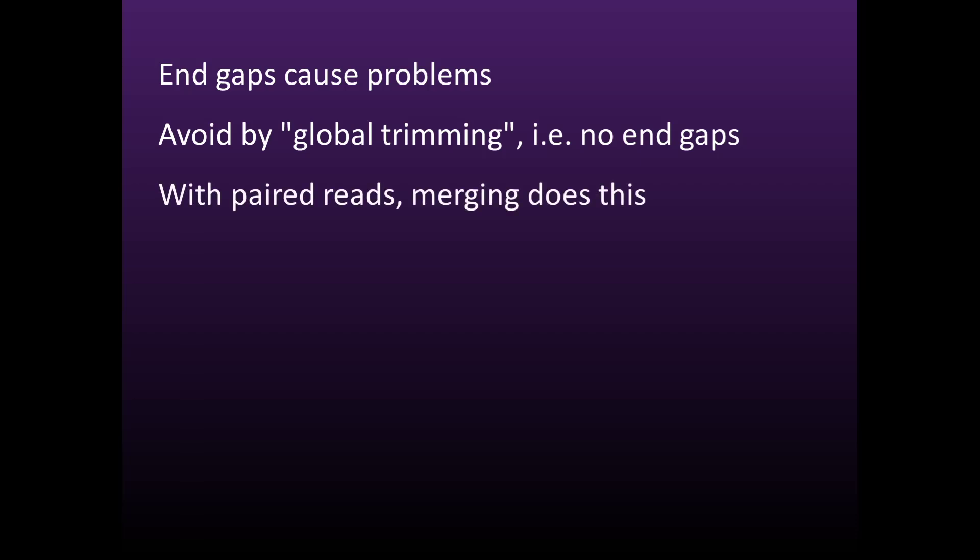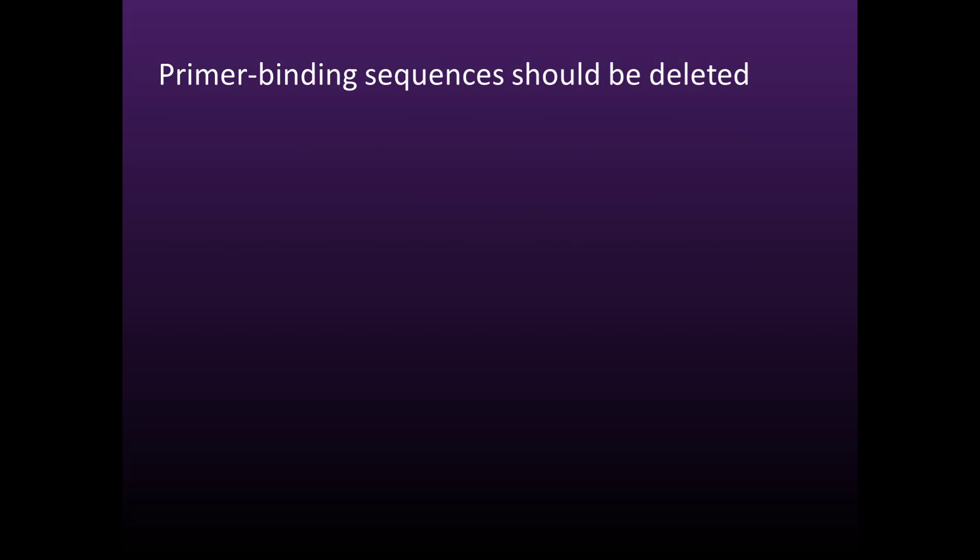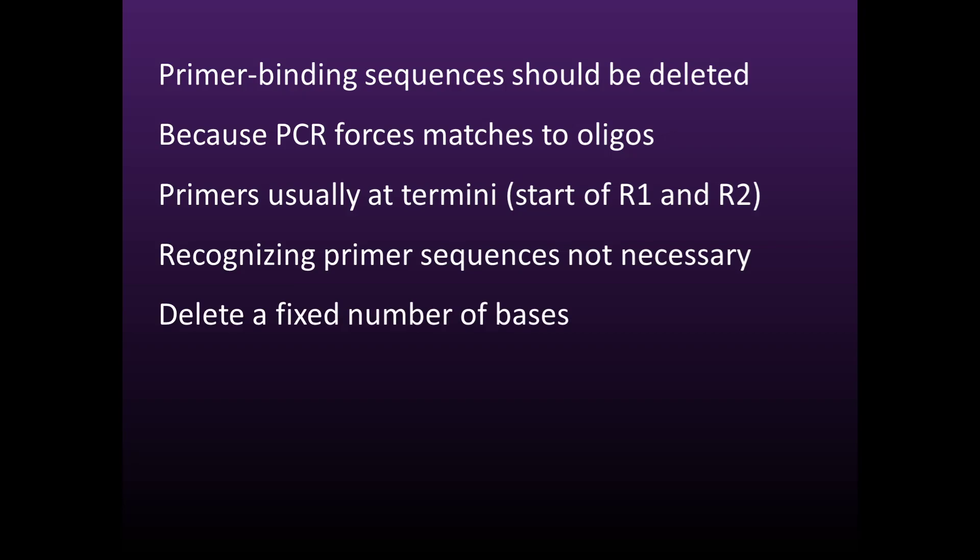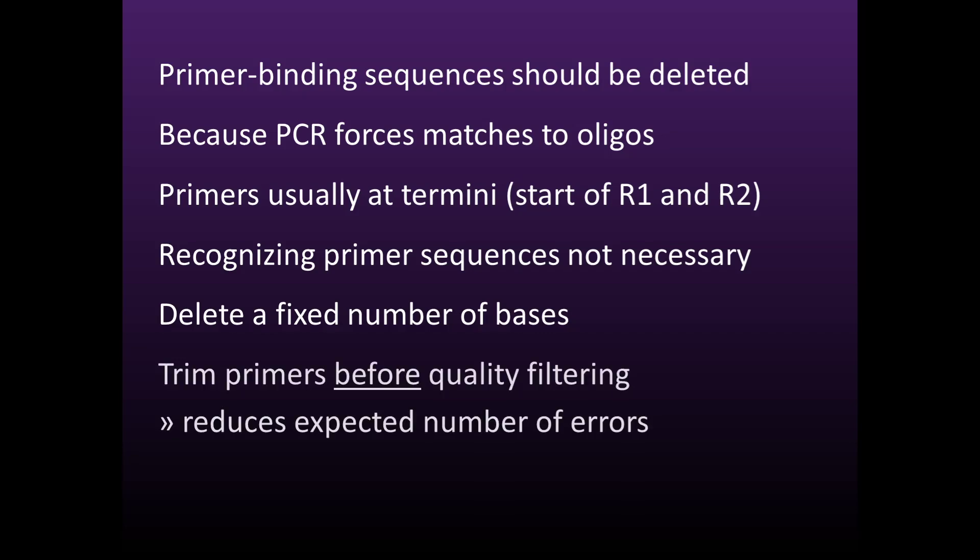With paired reads, merging usually accomplishes this without further processing, because both the R1 and R2 reads terminate with primers. These primer binding sequences should be deleted because PCR forces matches to the oligos. Primer sequences are usually exactly at the start of the R1 and R2 reads, which means that recognizing the primer sequence is not necessary. It's enough just to delete a fixed number of bases. The primer should be deleted before quality filtering, because each base adds a non-zero probability of error.